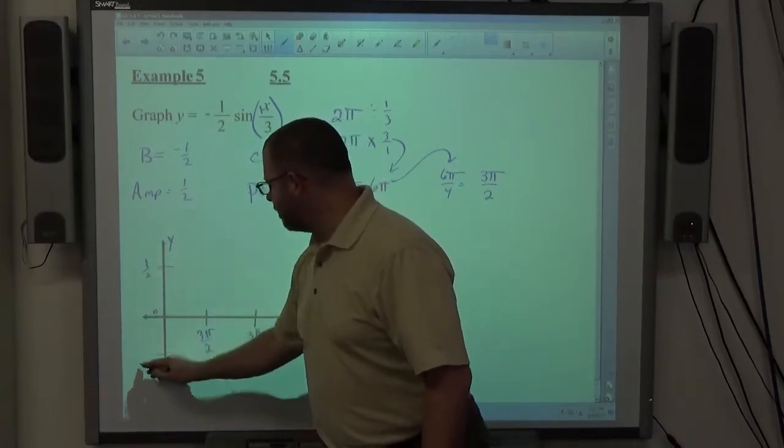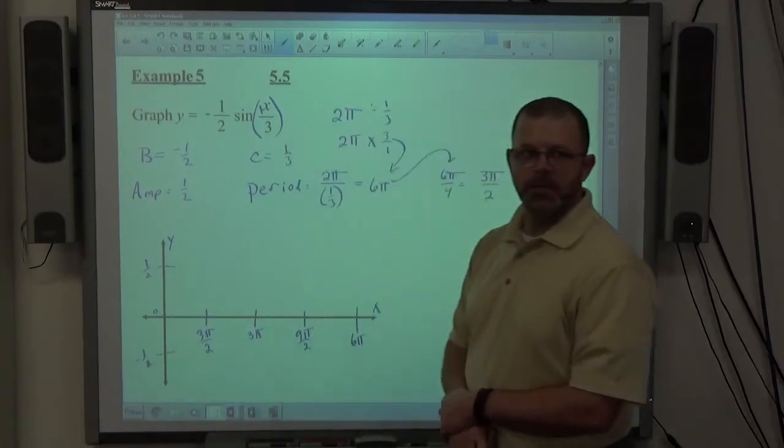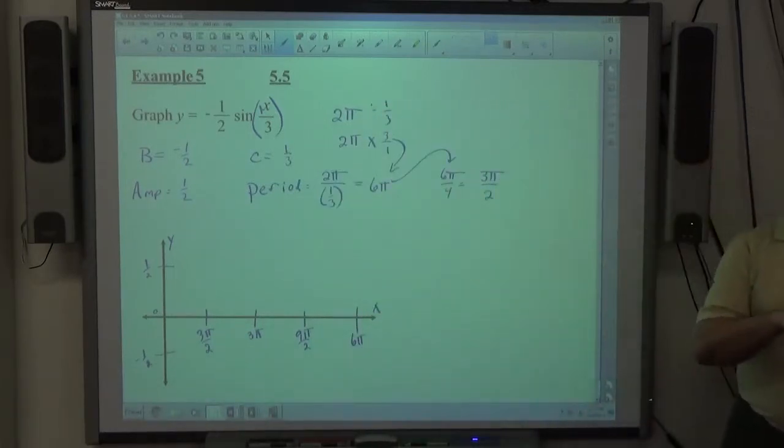Amplitude is a half, so this is positive a half, negative a half. The first problem went up and down two. The second problem up and down one. This one up and down a half. So each one's getting a little bit shorter than the other one, right?